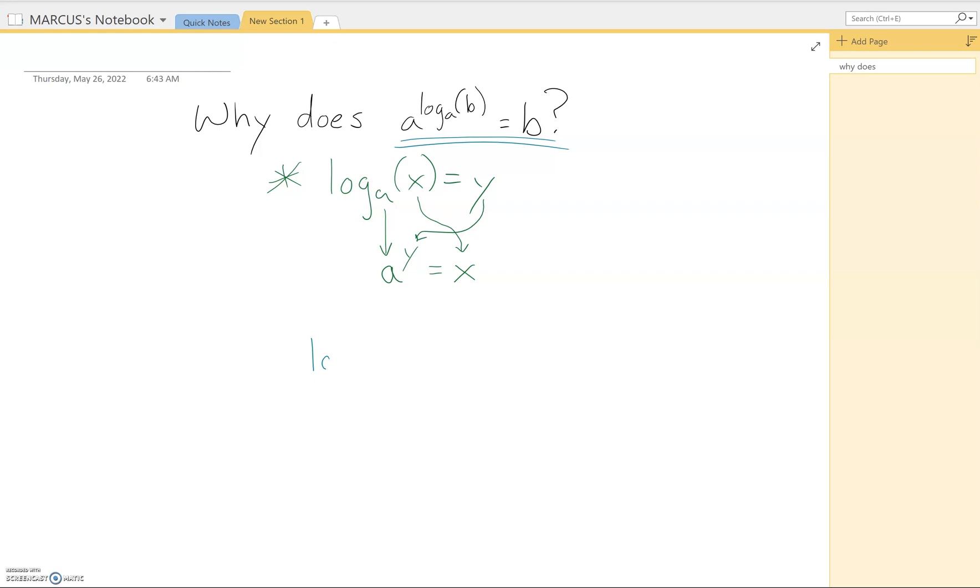What we're going to do is say that log base a of b equals itself. That should make sense - log base a of b equals log base a of b. Then we're going to do a little manipulation using this definition up above.